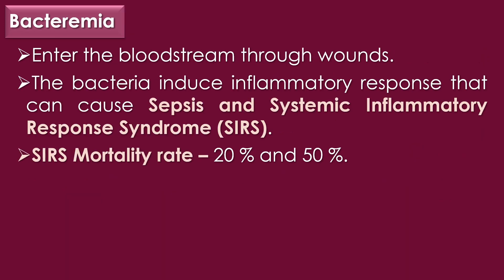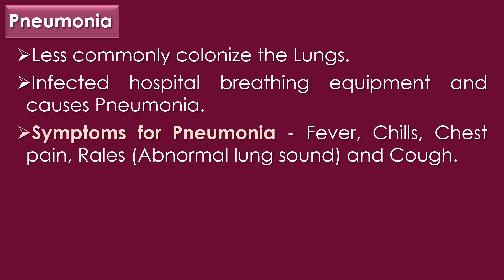The third clinical disease is bacteremia. Proteus mirabilis can enter the bloodstream through wounds; the bacteria induce an inflammatory response that can cause sepsis and systemic inflammatory response syndrome (SIRS), which has a mortality rate of 20 to 50 percent. The fourth clinical disease is pneumonia. Proteus mirabilis can, less commonly, colonize the lungs as a result of infected hospital breathing equipment. Symptoms of pneumonia include fever, chills, chest pain, rales or abnormal lung sounds, and cough.